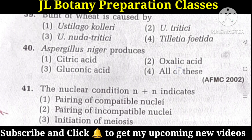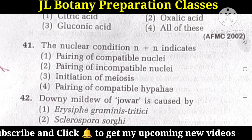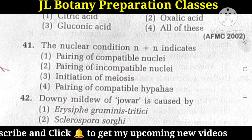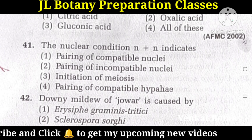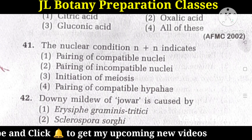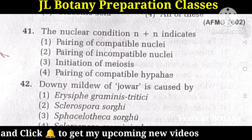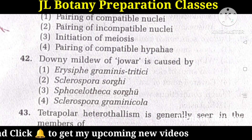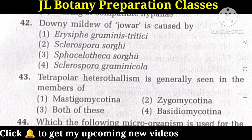Aspergillus niger produces all of these: citric acid, oxalic acid, and gluconic acid. The nuclear condition N+1 indicates pairing of compatible nuclei — the first option. Downy mildew of jowar is caused by Sclerospora sorgai — the second option. Tetrapolar heterothalism is generally seen in members of Basidiomycotina.